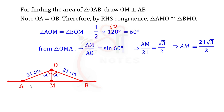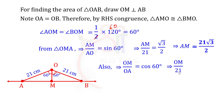For the adjacent side OM, we use cosine: cos theta equals adjacent by hypotenuse, so cos 60 degrees equals OM by OA. Therefore OM by 21 equals cos 60 degrees, which is 1 by 2. So OM equals 21 into 1 by 2, which equals 21 by 2.